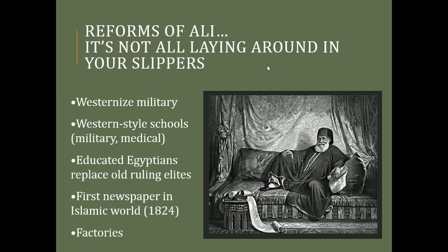This did not just involve relaxing — to westernize his military, Muhammad Ali needed western-style schools: military academies, medical schools to treat and keep troops healthy. Educated Egyptians who could study German or English replaced the old ruling elites. This is very important: it replaced especially religious elites — the ulama, people who study and understand the Quran — whose importance began to fade under this huge stress on modernizing and westernizing the military.